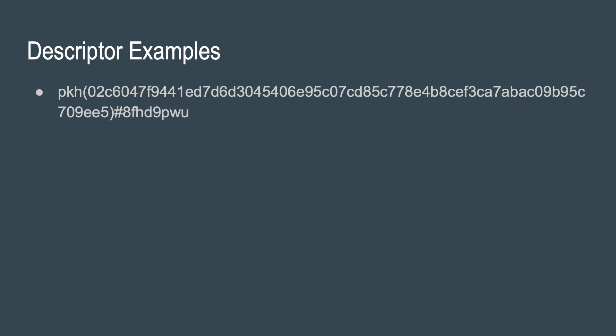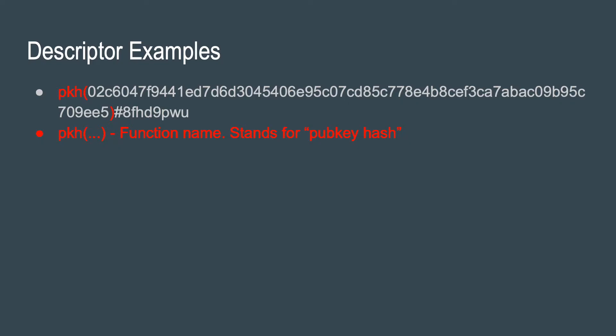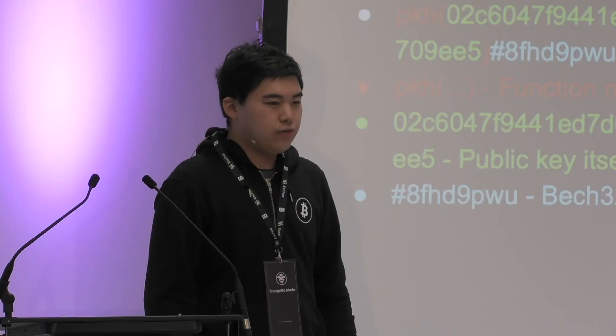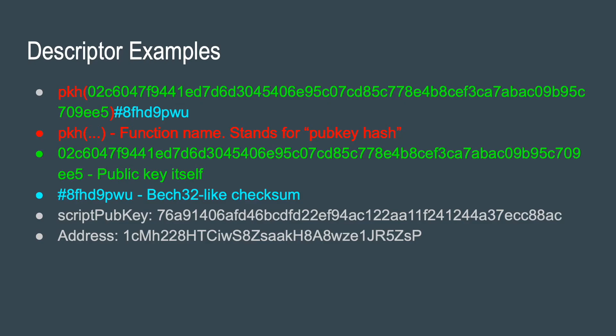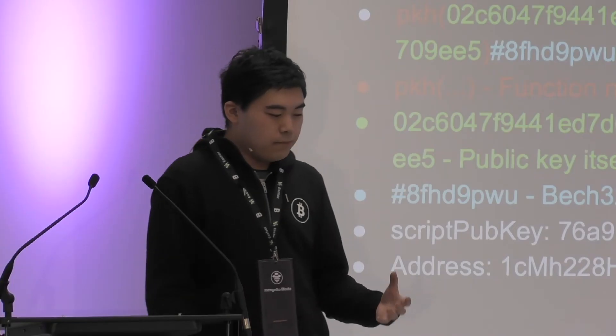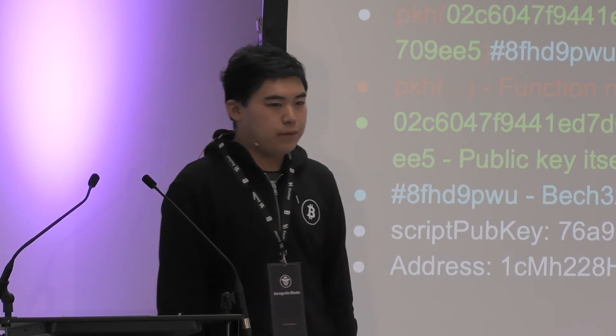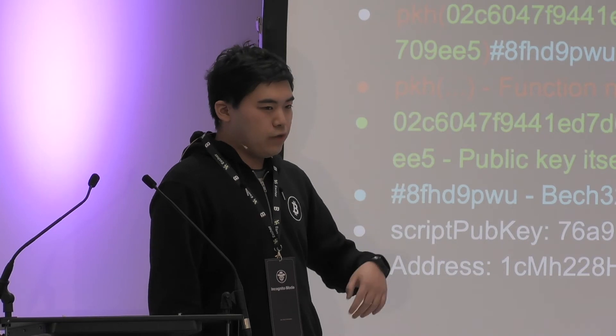Here's a simple descriptor. At the beginning it says PKH — pub key hash — just a function name that tells you it returns a pub key hash script. The argument is simply a public key, and at the end there's a checksum based on bech32, providing error detection and correction in case you're typing these in by hand. From this descriptor, we know the script pubkey and the address. Besides knowing the output script, we also know what we need to produce a valid signature: we need that pubkey and its corresponding private key, so it's solvable.